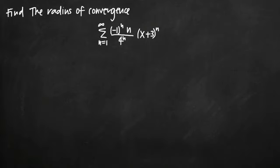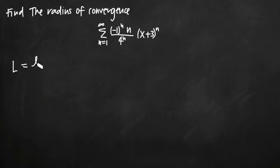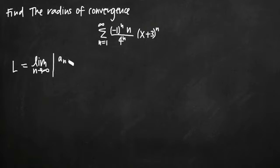In order to find the radius of convergence of a series like this, we're going to use the ratio test for convergence — that's the most common way to find the radius of convergence of any series. The ratio test tells us that we're going to find some number L, which is equal to the limit as n approaches infinity of the absolute value of a sub n plus 1, all divided by a sub n.